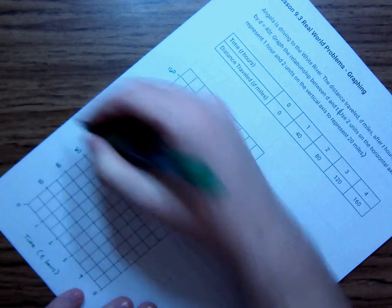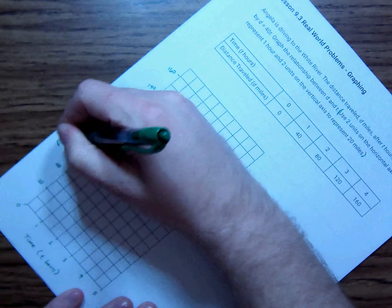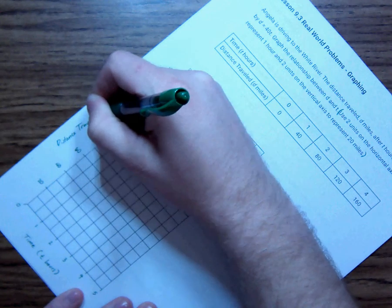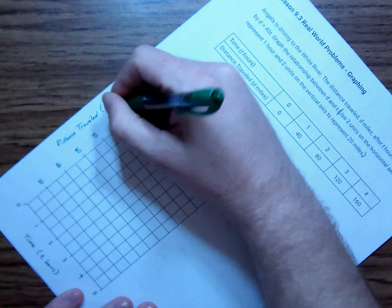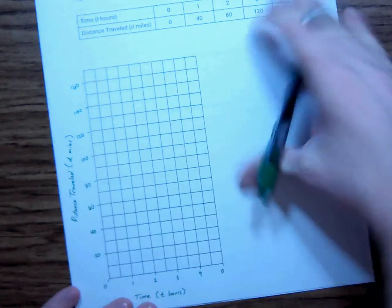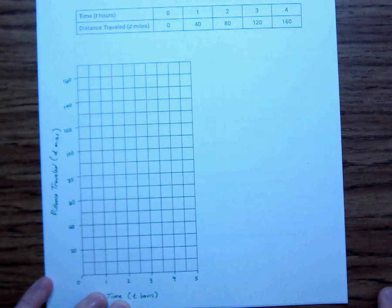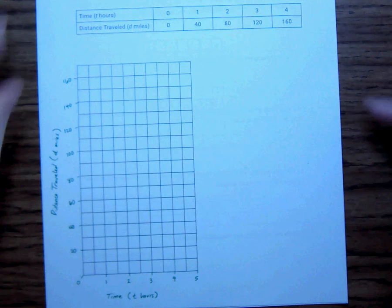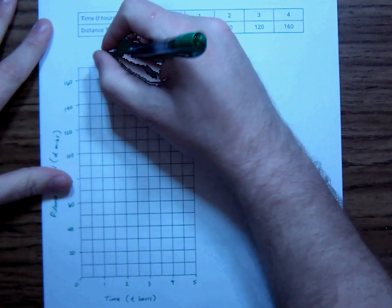And up and down is distance traveled. And that is D miles. And I also want to give this a title. So, the title I'm going to give it is, Angela's Driving.